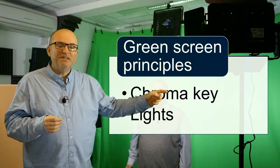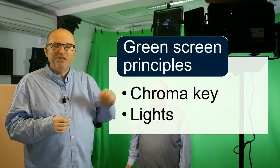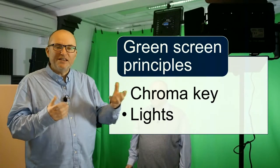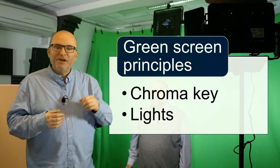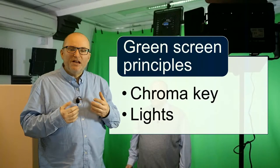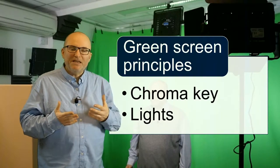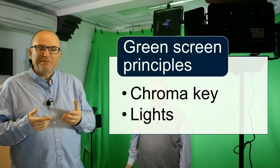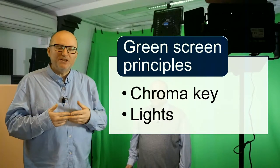Chroma key basically means they take the key value of the color, remove it from the video, and replace it with something else. The reason green is used is because green is not part of natural skin complexion, so if you have people on screen, green is not in their face and there's no contrast there. People sometimes also used blue screen in the past.